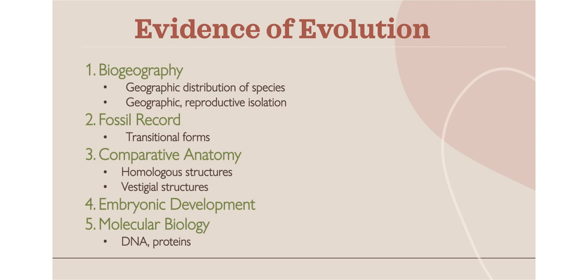We can compare the anatomy of current existing animals — both homologous structures, where 'homo' means the same, and something called vestigial structures, which are leftover structures. We can also look at embryonic development, especially with similar organisms, for example chordates or organisms with a backbone.